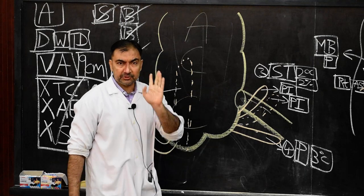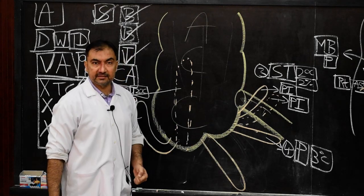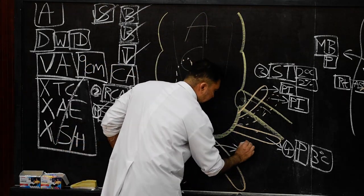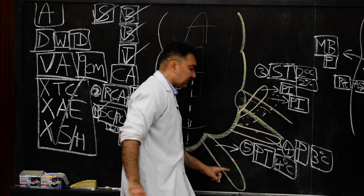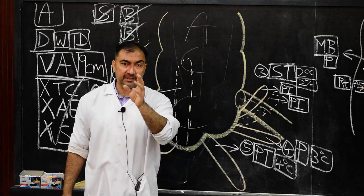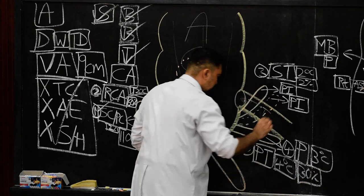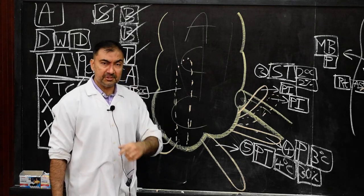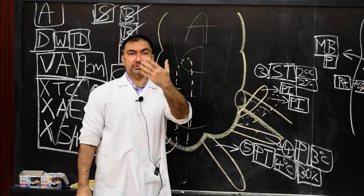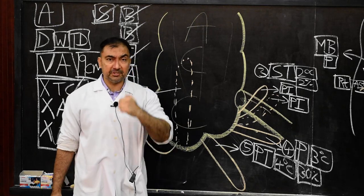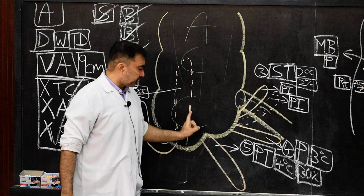Position number five is the pelvic type of appendix — four o'clock position. This is the second most common position, present in 30% of subjects. Many MCQs ask: what is the second most common position? It is the pelvic type, four o'clock position. The most common is twelve o'clock — retrocecal — and the second most common is four o'clock — pelvic.